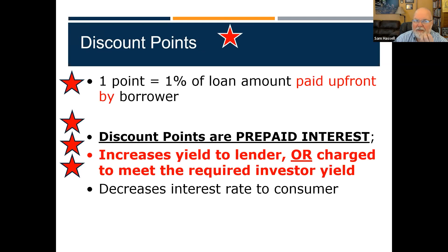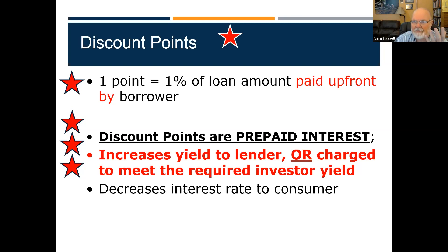Has anybody ever heard of discount points — points on interest? If somebody offers to pay points, the word 'point' in a financial transaction means a percent. One point is 1% of the loan value. So if I'm borrowing $100,000, the discount point would be 1% — I'd pay $1,000. So one point is equal to 1% of the loan amount paid up front by the borrower.